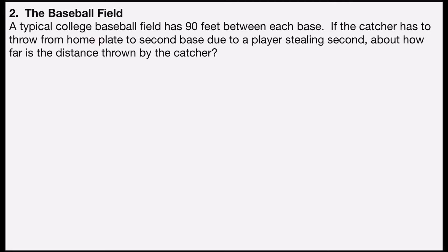Problem number two is the baseball field problem. A typical college baseball field has 90 feet between each base. If the catcher has to throw from home plate to second base due to a player stealing second, about how far is the distance thrown? We can draw a diagram: the distance from home plate to first base, and first base to second base, are both 90 feet. The distance between home plate and second is the hypotenuse of the right triangle — that's what we're looking for.